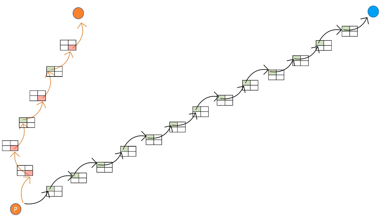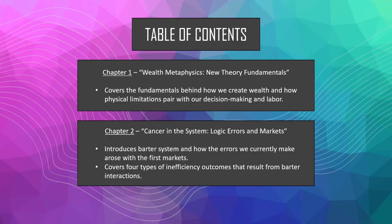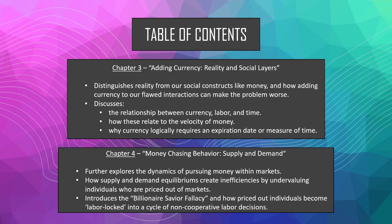In the next lecture we'll cover the core concepts from chapters one and two, addressing the fundamentals of wealth creation and how this logical error first arose in the barter system and then how it spread. Chapter three picks up with the real versus social differences covered in the introduction, getting into how we should logically ground our currency and why a coherent currency is going to require an expiration date.